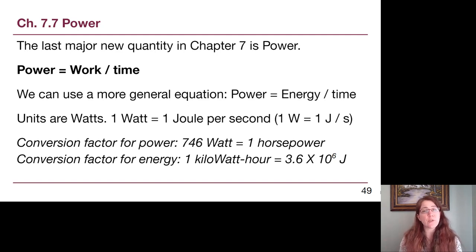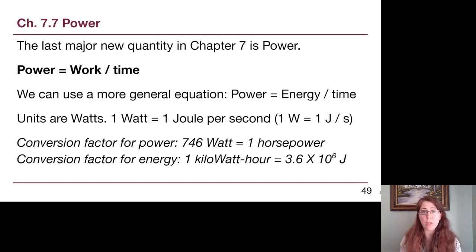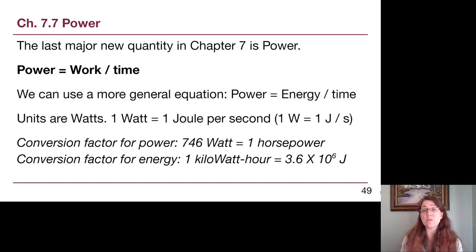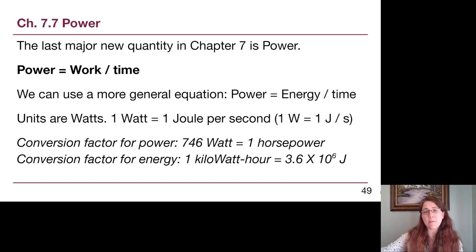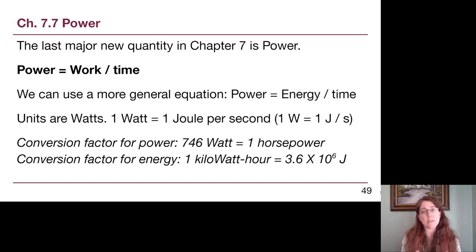The units for power are watts. Just like for a light bulb — if you have a 70-watt light bulb, that is telling you it is using up energy at 70 joules per second, because 1 watt is 1 joule per second.